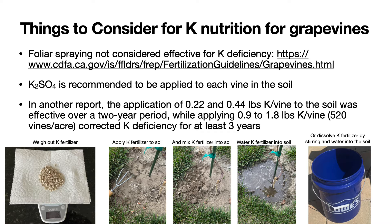So it looks like we have a potassium deficiency symptom — what can we do about it? One option would be to spray the plant with a potassium solution, such as we did with the iron treatment. However, foliar spray has not been effective for treating potassium deficiency in grapevines, as listed here in the citation. What's generally recommended is that potassium sulfate is applied to the vine in the soil — not potassium chloride, because that can start to build up in the plant and become toxic. The chloride in particular is known to cause some issues with grapevines over time. In one report, there was an application of about 0.22 to 0.44 pounds of potassium per vine to the soil. It was effective for about a two-year period, and by applying a little bit more, one could get potassium deficiency corrected for at least three years.